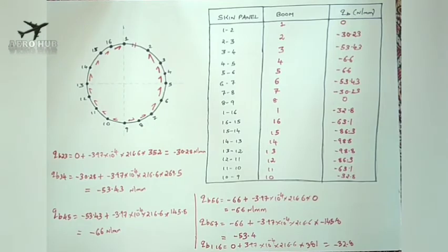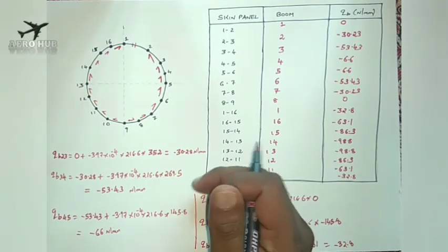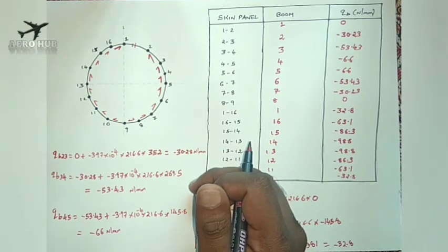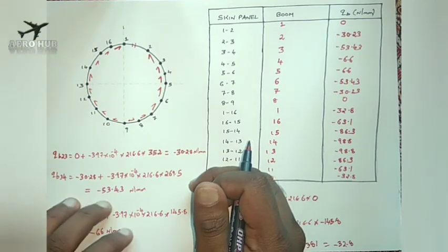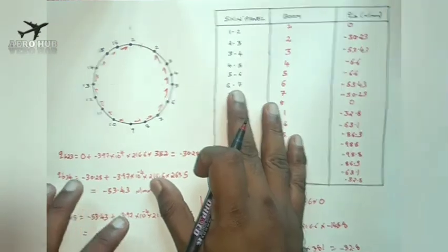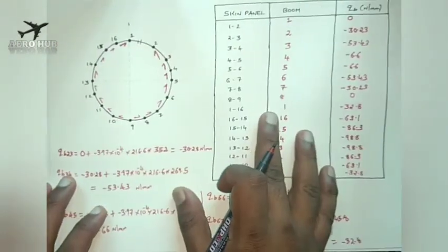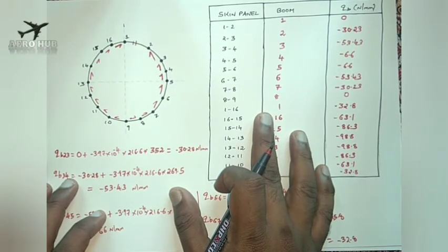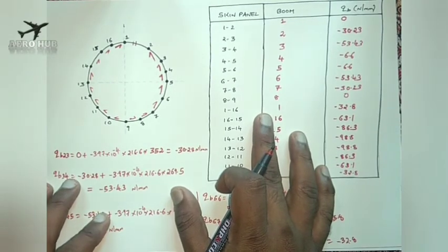Now we have to find out the value of QS naught. To find QS naught, we have to take the moment of the shear flow — the internal moment should balance the external moment. We are applying a shear load of 100 kN at a distance of 150 mm.